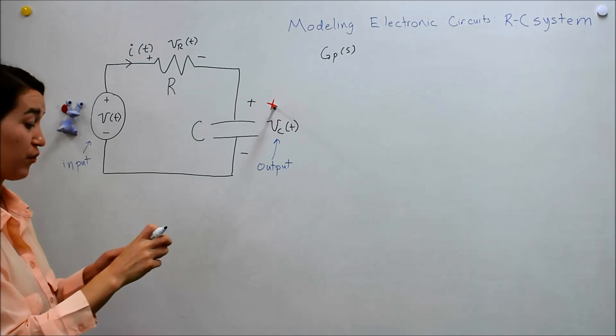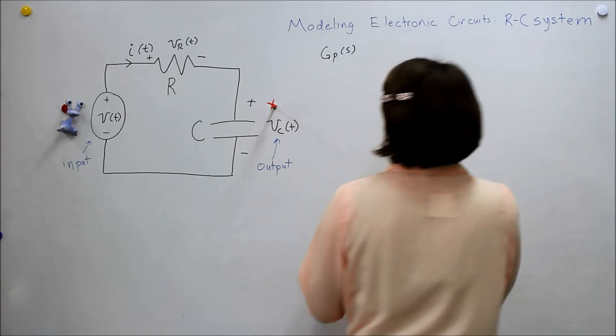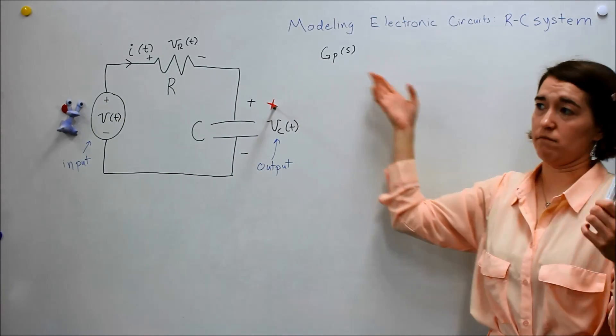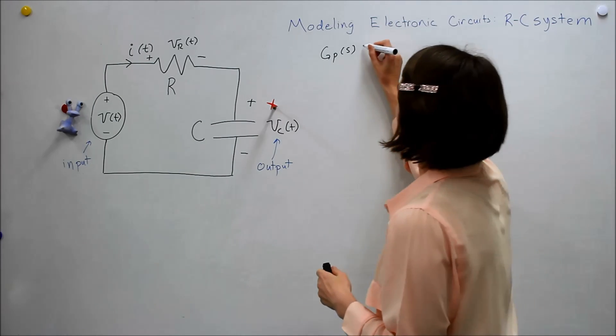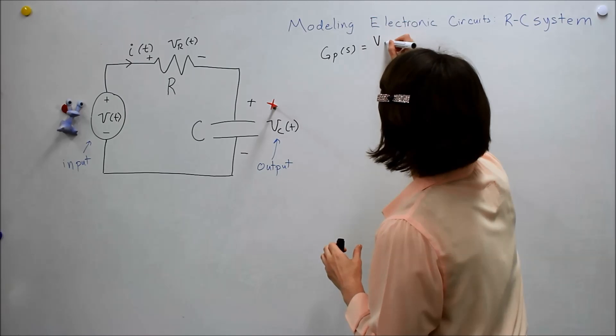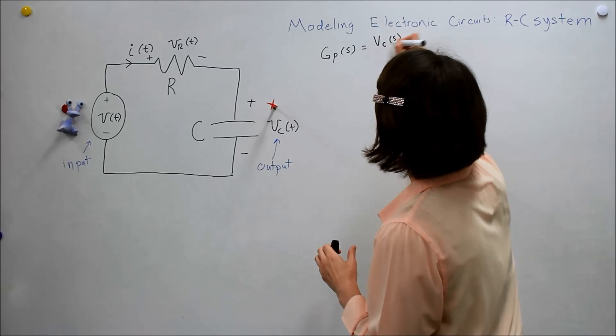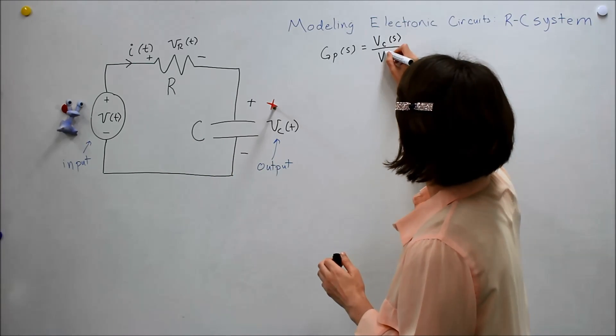So now we want to derive the transfer function for this system. And this is the expression for our transfer function. What this really means is you just want the output variable, vc of s, over the input variable, so v of s.